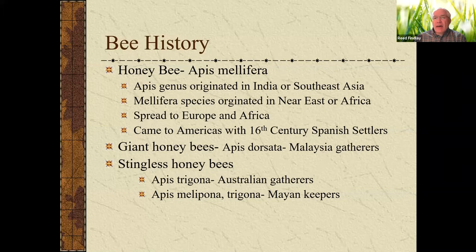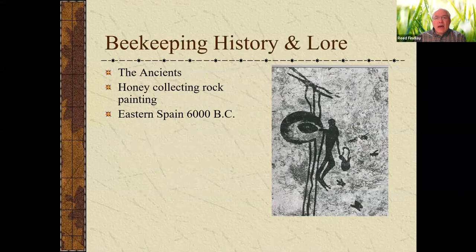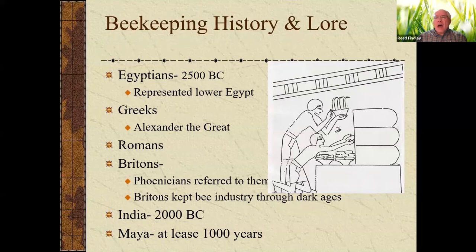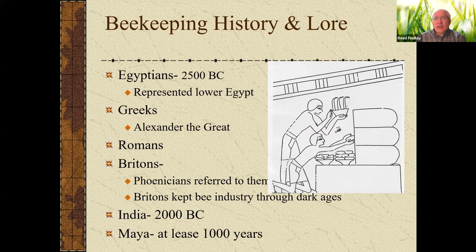The Mayan culture kept these bees in logs, and it was really important for their way of life. Beekeeping and especially gathering honey has been going on for a long time — this is a rock art that depicts the gathering of honey, 6,000 BC. Some of the earliest forms of beekeeping itself — not just hunter-gatherer types gathering from natural bee colonies — were the Egyptians. In fact, the honeybee was one of the symbols that represented lower Egypt, and there are hieroglyphs of them taking honey out of their clay pots.